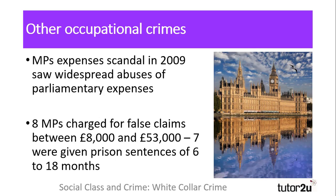A final form of white collar crime is expense fraud. In the UK, the MPs expenses scandal broke in 2009 with a Freedom of Information request into what MPs claimed expenses for. Journalists found widespread abuse of the parliamentary expenses system, with MPs claiming for second properties they didn't live in, paying their partners salaries to be part of their staff, and more ridiculous claims such as duck houses, toilet seats, and the cleaning of a moat around one MP's country house. Whilst most MPs were ordered to repay expenses, including leaders of all three major political parties, eight MPs were charged with making false claims of between £8,000 and £53,000, seven of whom were given prison sentences ranging between six and eighteen months. The eighth was deemed too ill to stand trial.